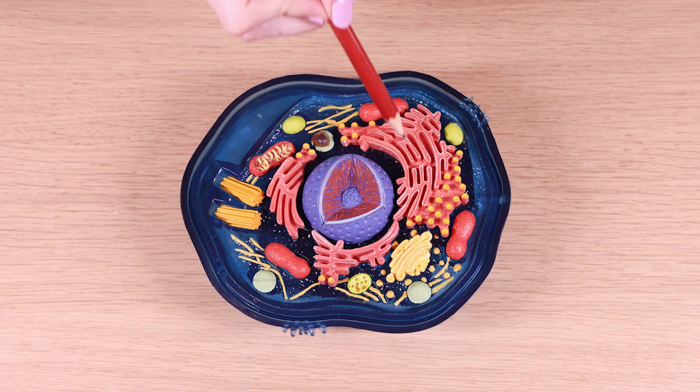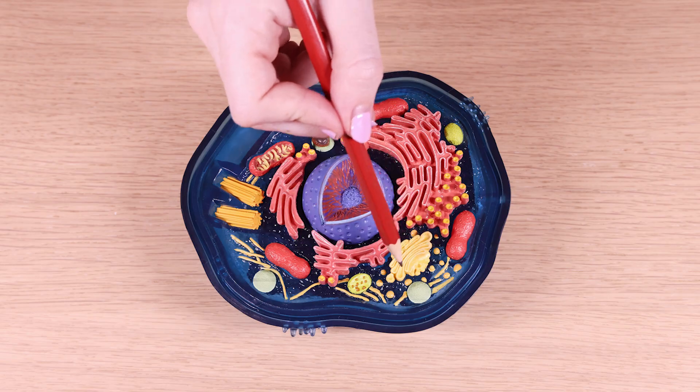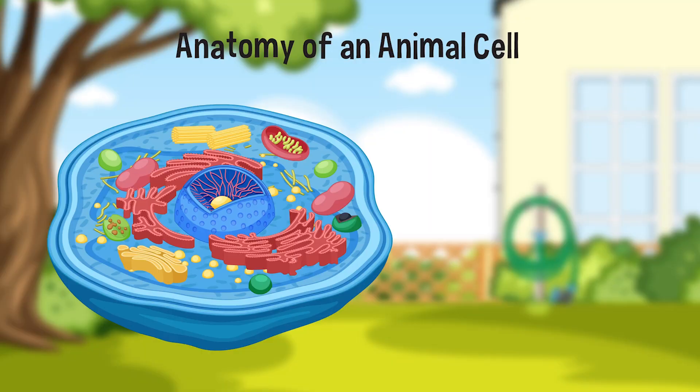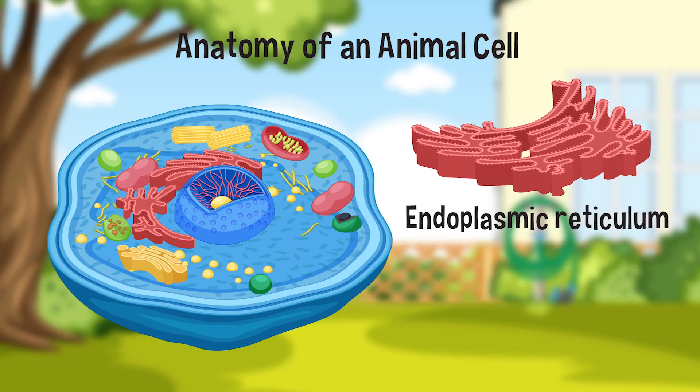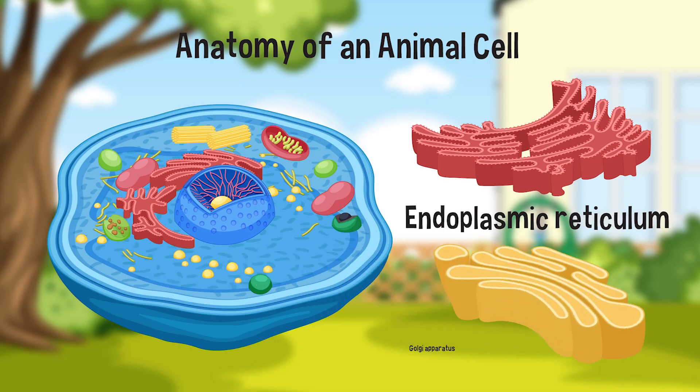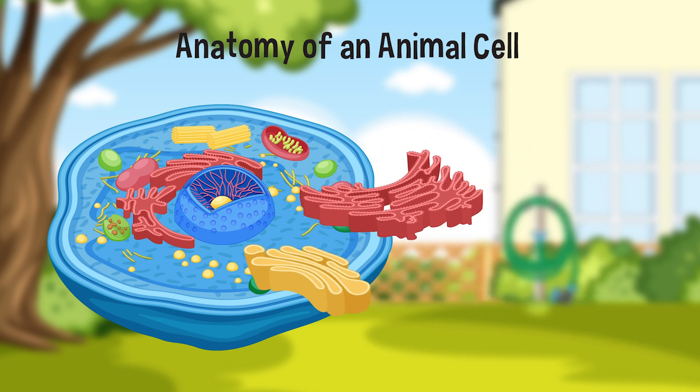Throughout the cell, we find the endoplasmic reticulum and the Golgi apparatus. The endoplasmic reticulum is a network of flattened sacs and tubules that are involved in the processing and transport of lipids and proteins. The Golgi apparatus modifies, sorts, and packages these molecules for transport to other parts of the cell or to the outside of the cell.